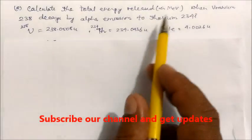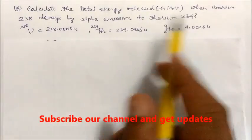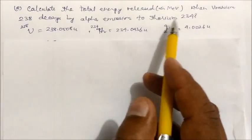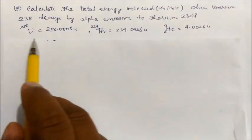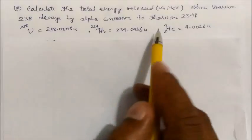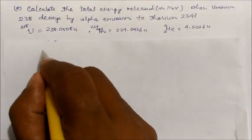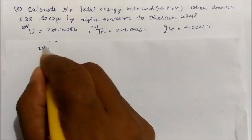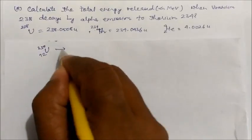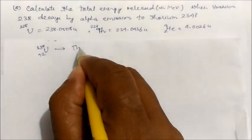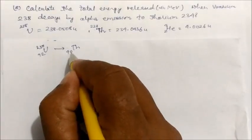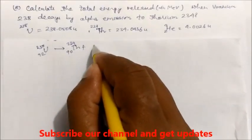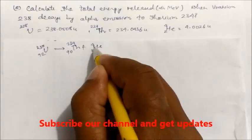Next question: calculate the total energy released in MeV when uranium-238 decays by alpha emission to thorium-234, with the masses of the nuclei given. First, let us write the equation: U-238 decays into thorium with atomic number 90 and mass number 234, plus a helium nucleus (alpha particle).